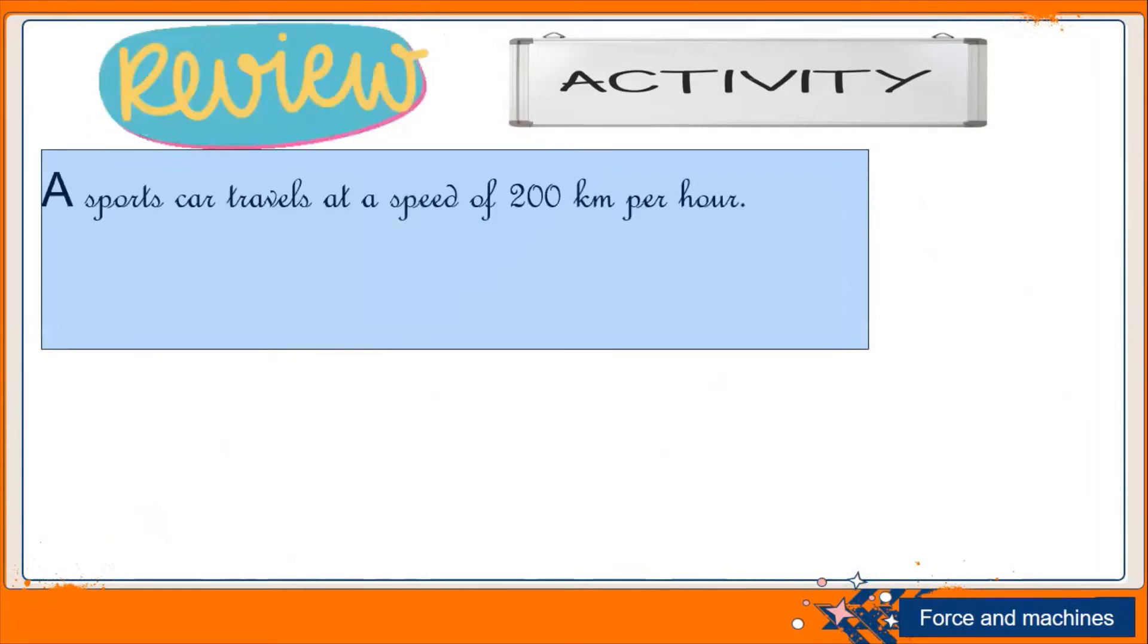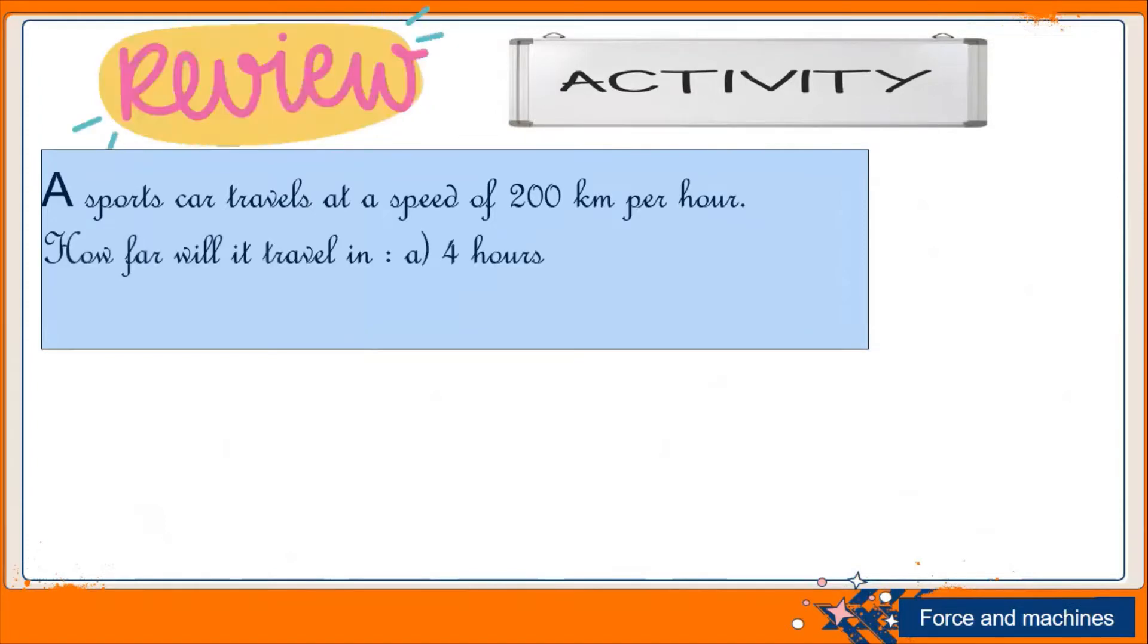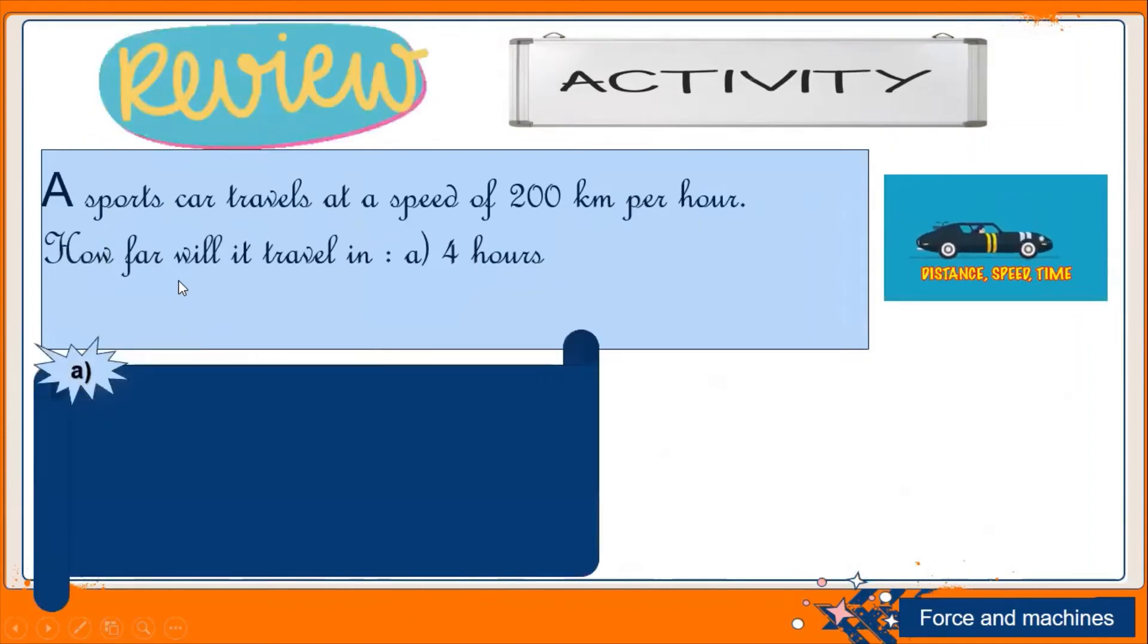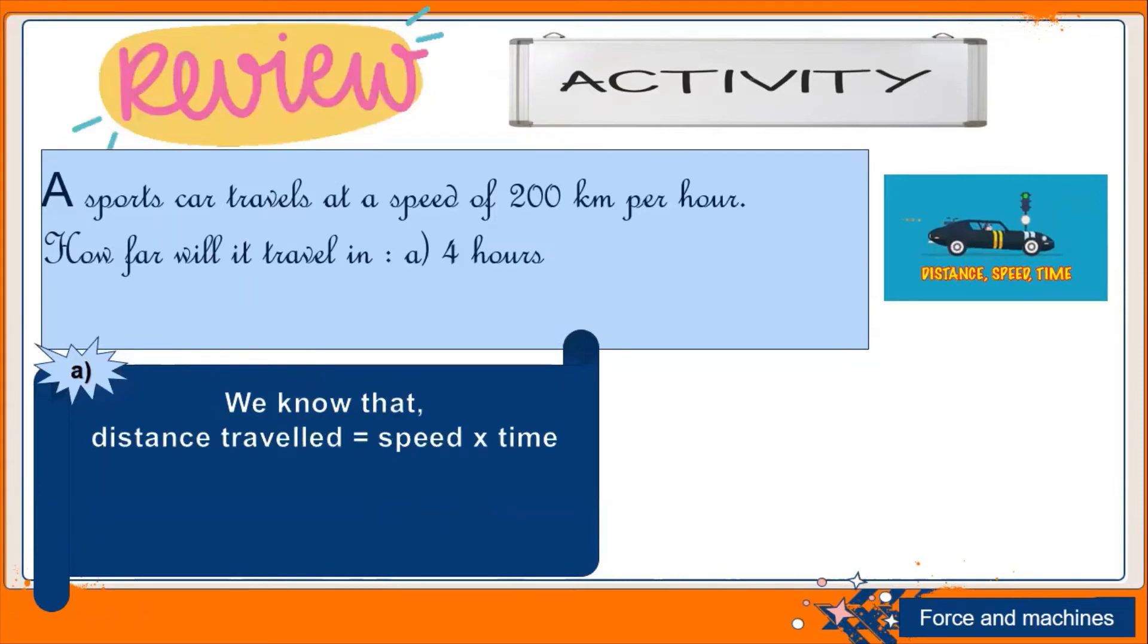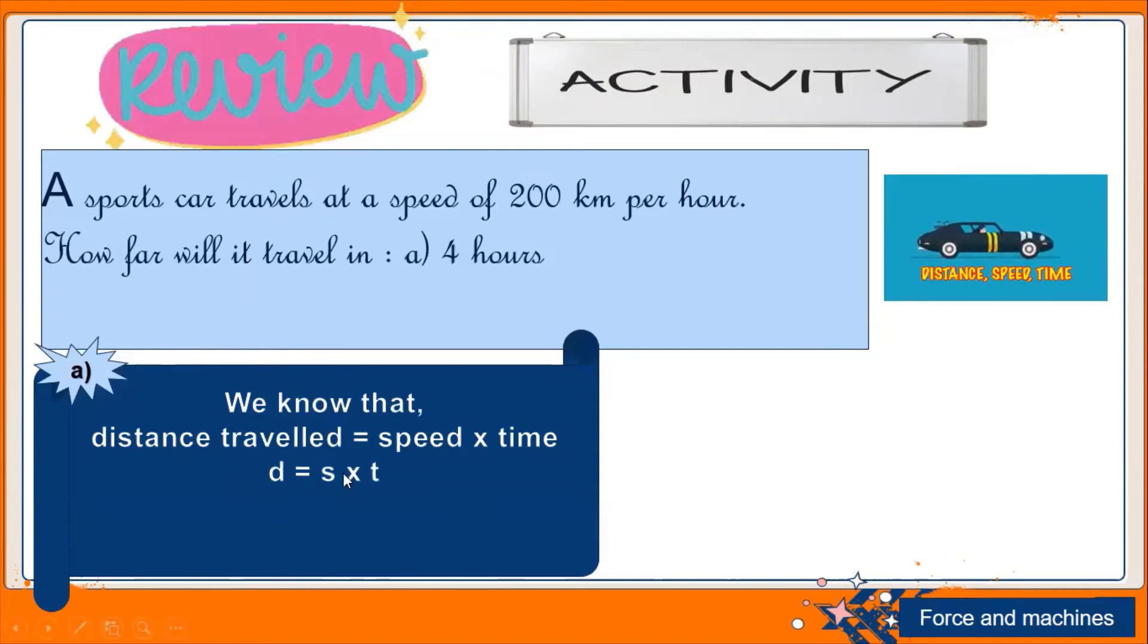In this question, a sports car travels at a speed of 200 kilometers per hour. Here we need to calculate how far, means we need to calculate the distance. For that, students, as we know that distance traveled equals speed multiplied by time. So we're making a formula like D equals S multiplied by T. Here S equals 200 and time equals 4. We put the values: speed is 200 kilometer per hour and time is 4 hours. Just putting the value and after that solve it. So 200 multiplied by 4 is 800 kilometers. That is the distance we find out from our formula.